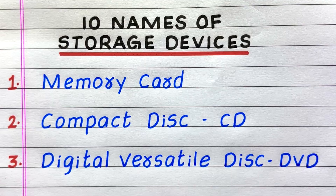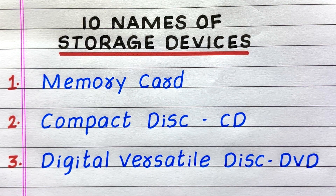The name of the first storage device is memory card. Second: compact disc. Third: digital versatile disc.